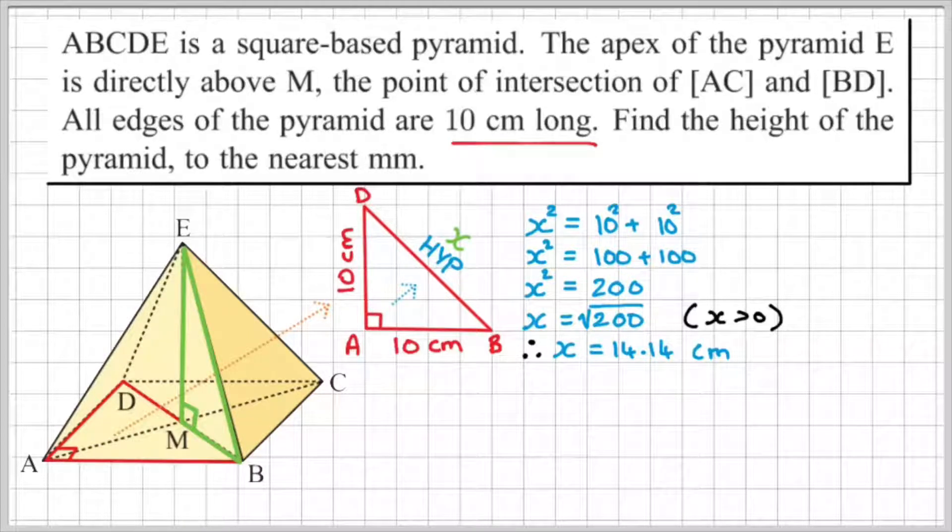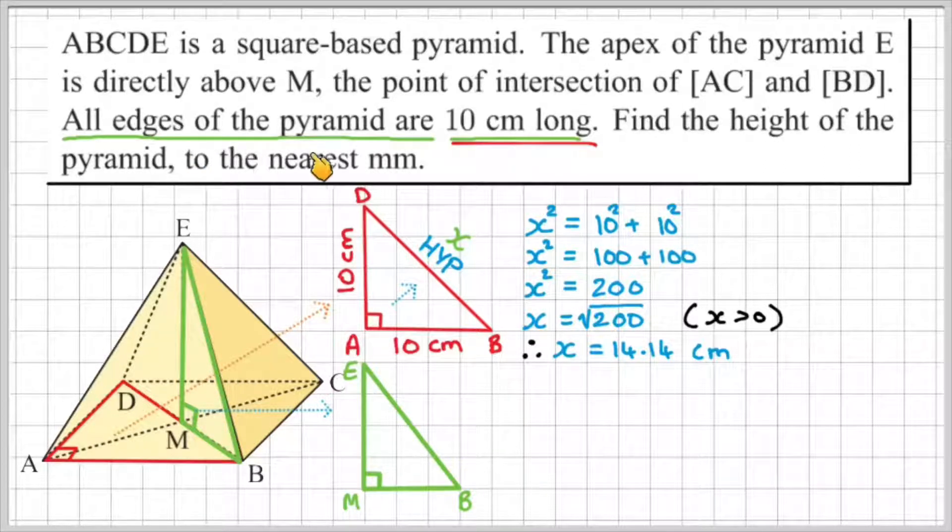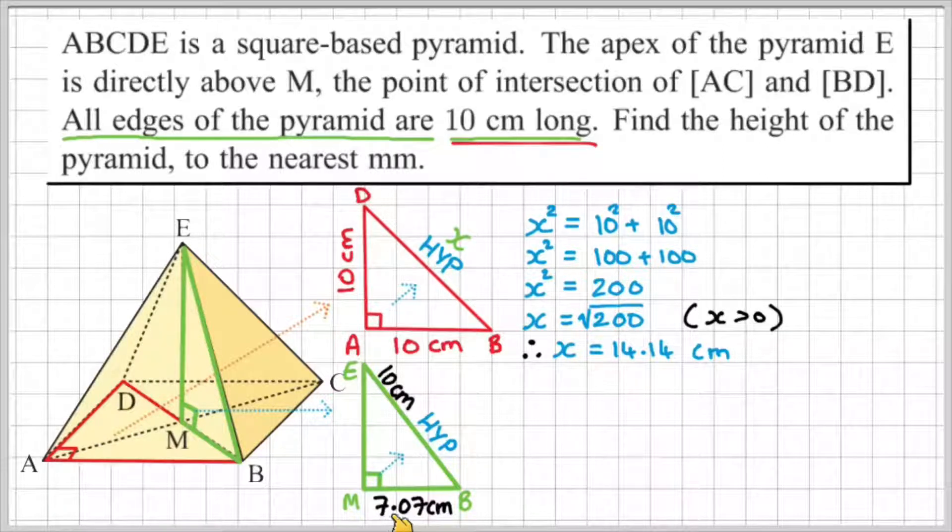For the second part of the process, we need to now work out the height EM using the base that we just found. We already know that this edge is 10 centimeters. So let's set up a triangle. We have EMB, and we know that all edges of the pyramid are 10 centimeters long. So that means our hypotenuse EB is going to be 10 centimeters. We know that the base MB is going to be half of 14.14, which in this case is 7.07 centimeters. And we can label the final length EM as Y. So that's the variable I'm trying to find out.